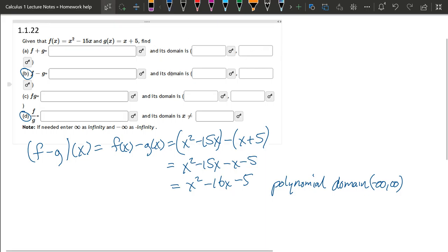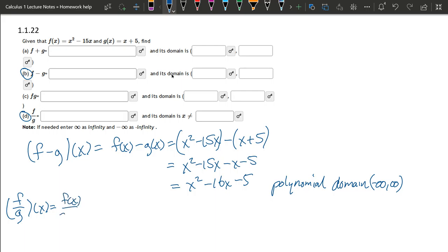So now we're going to look at part d. It's just written as f over g, but it's f over g of x. And just like before, this means f of x over g of x. So I can already tell there's a chance to divide by zero because we have a fraction. So we're going to write our f on the top, x squared minus 15x, divided by our g, x plus 5.